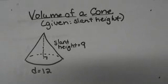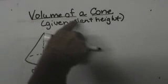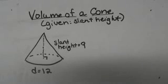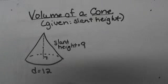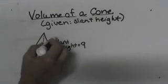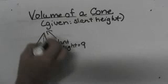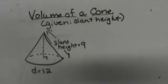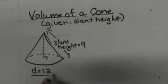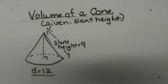Hi, welcome to Moo Moo Math. Today we are going to look at how to find the volume of a cone, but instead of being given all the information you need, we are going to give you the slant height of the cone — which is the outside edge — and the diameter of the cone, which is 12.